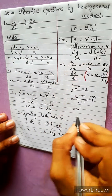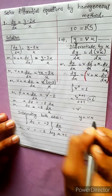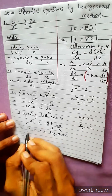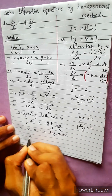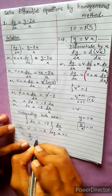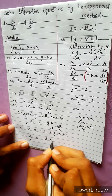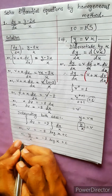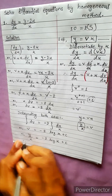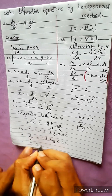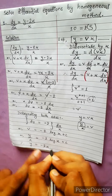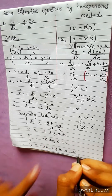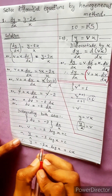Since y = vx, we have v = y divided by x. Substituting: y divided by x equals minus 2 log x plus c. Therefore, y equals minus 2x log x plus cx.